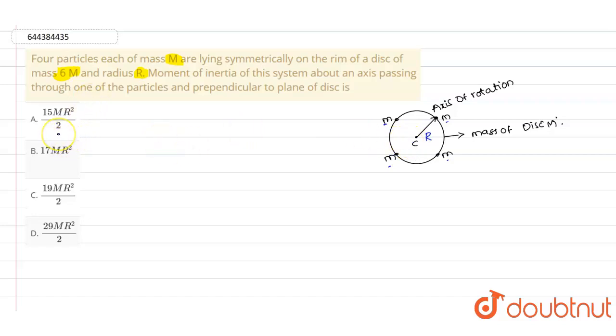By using parallel axis theorem, the moment of inertia of the disc can be written as I_d = (1/2)MR² + MR² which equals (3/2)MR².